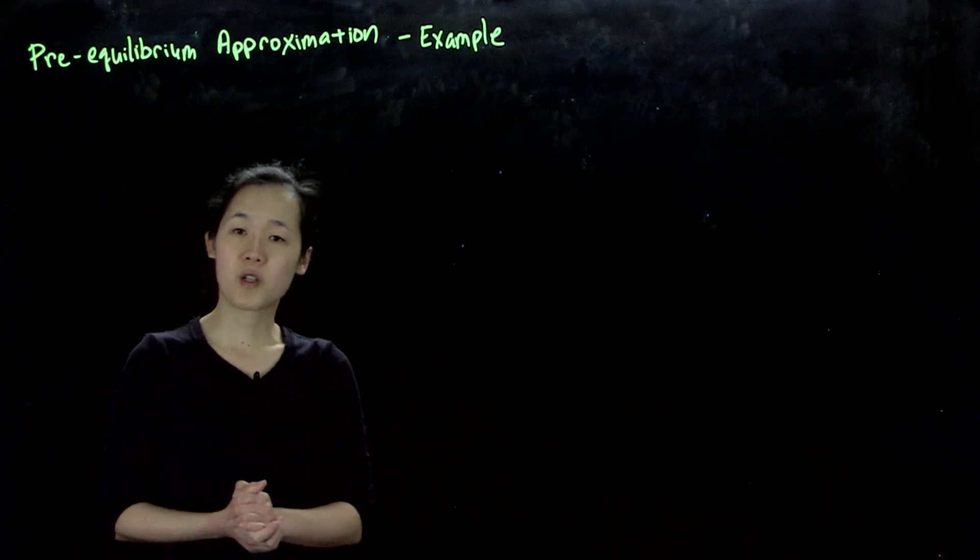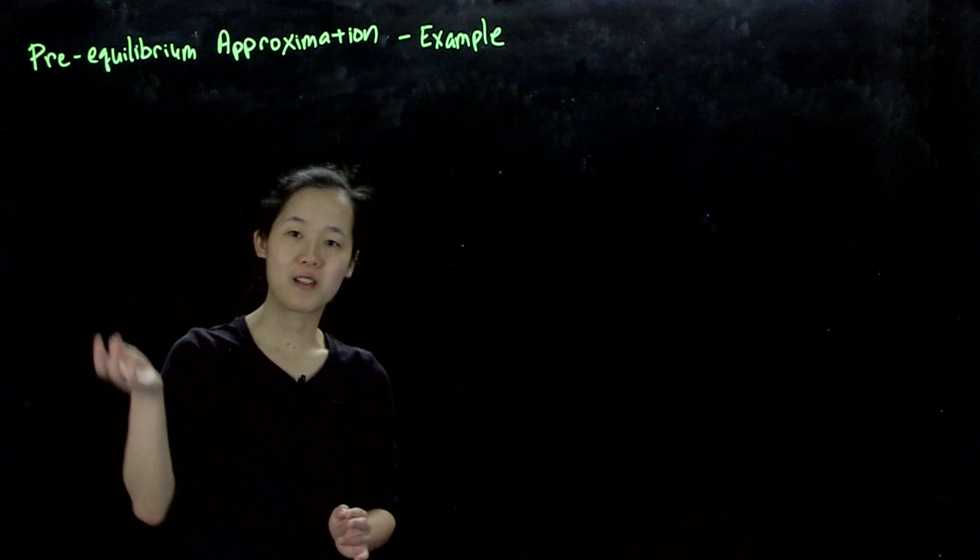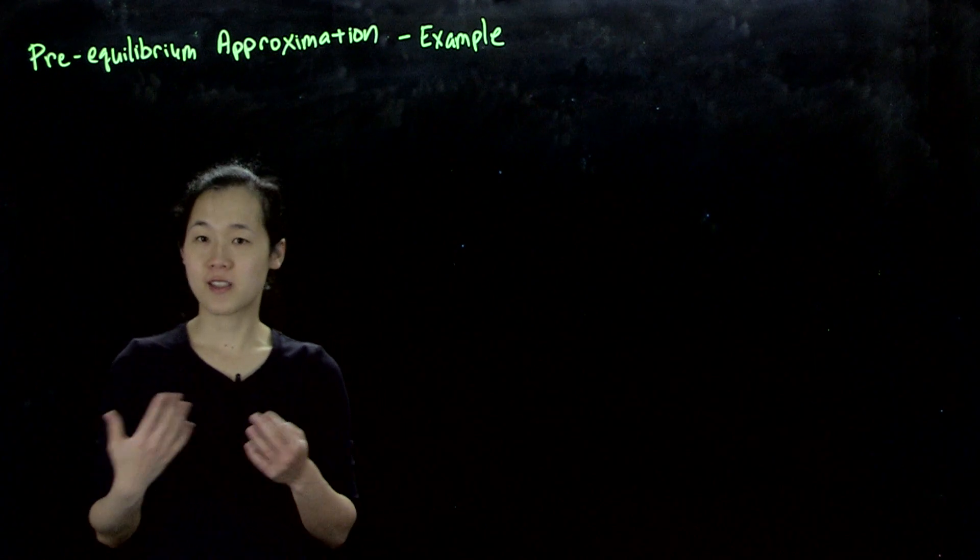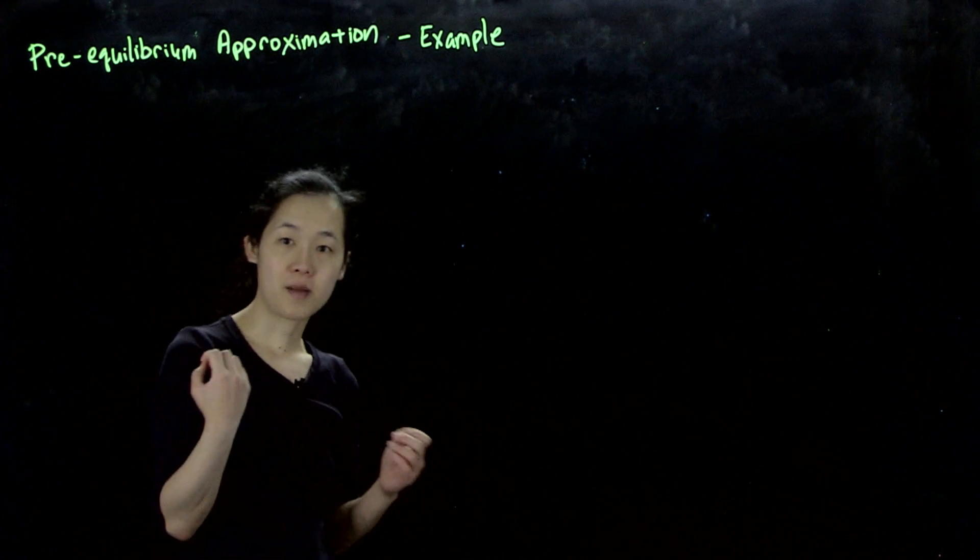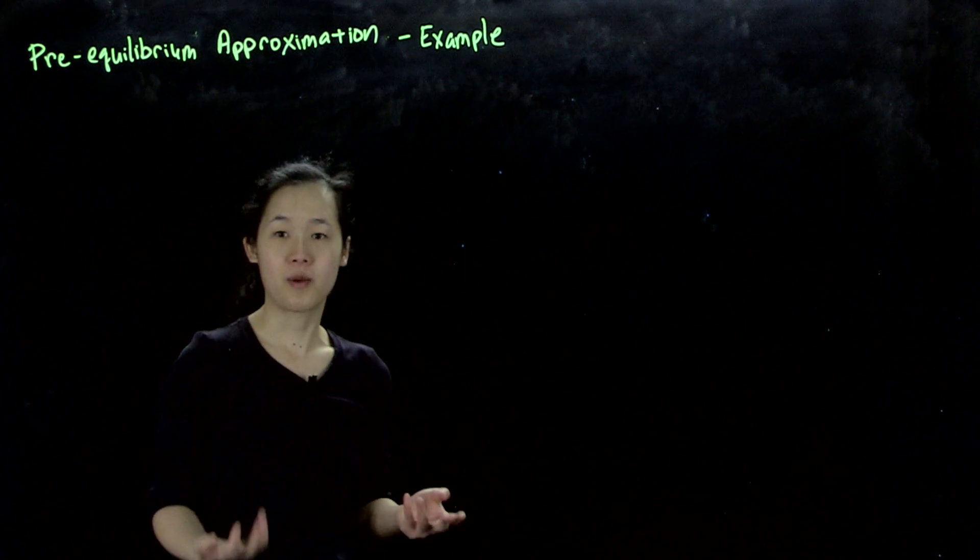Here's an example of a pre-equilibrium approximation problem that's more complicated and gives you a sense of how rate laws can be more complex than what we've discussed previously.